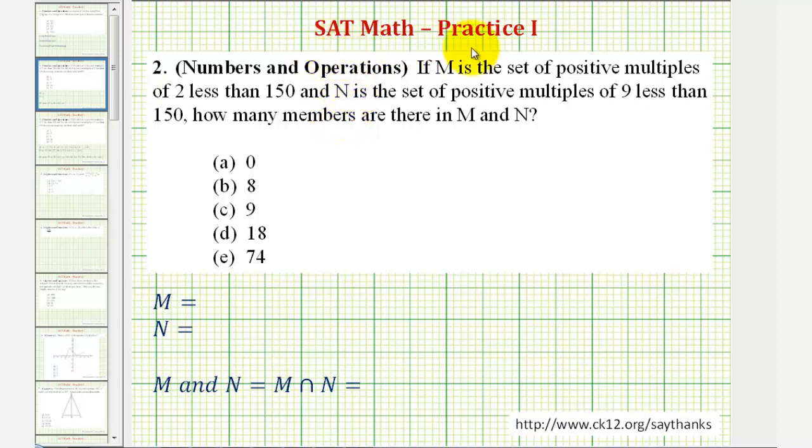Welcome to another practice SAT math question from the Numbers and Operations section. If M is a set of positive multiples of two less than 150, and N is a set of positive multiples of nine less than 150, how many members are there in M and N?